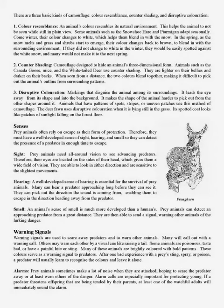There are three basic kinds of camouflage: color resemblance, counter shading, and disruptive coloration. Color resemblance is when an animal's color resembles its natural environment. This helps the animal to not be seen while still in plain view.